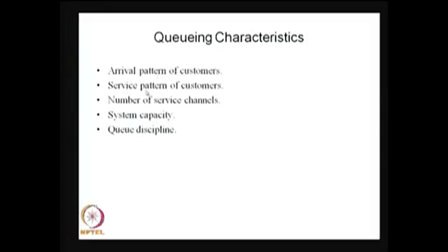Similarly, after customers enter the system you need to know how service takes place — whether the service time for each customer is constant or random. If constant, what is the fixed service time? If probabilistic, what is the distribution of service time? The third important characteristic is the number of servers in the system — how many service channels are available, whether one, more than one, or countably infinite.